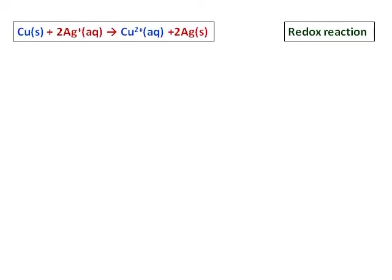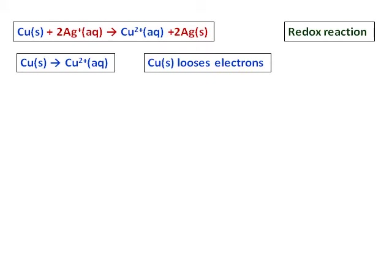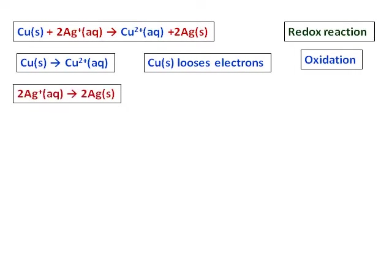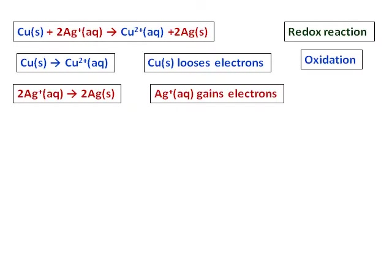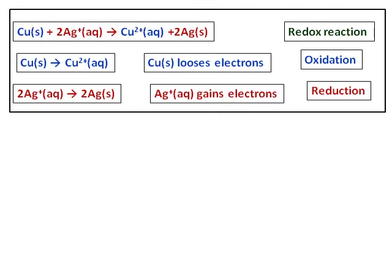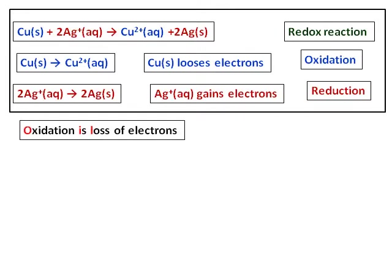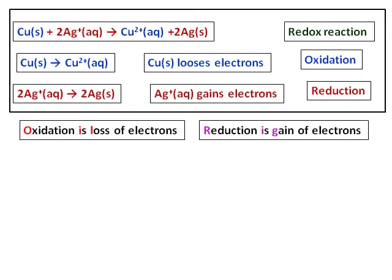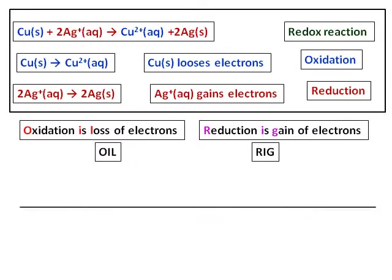The next thing we are going to learn is the redox reaction. What is a redox reaction? Consider the reaction between copper and silver plus. In this, copper solid is becoming copper 2+ aqueous — it is losing an electron and gaining a positive charge, and hence this is called oxidation. Then silver plus is becoming silver — it is gaining electrons, and hence the process is reduction. To remember this, use the mnemonic OIL RIG: Oxidation Is Loss of electrons, Reduction Is Gain of electrons.